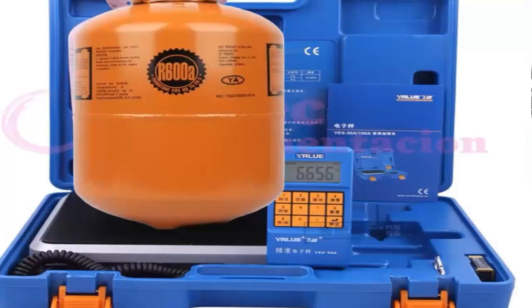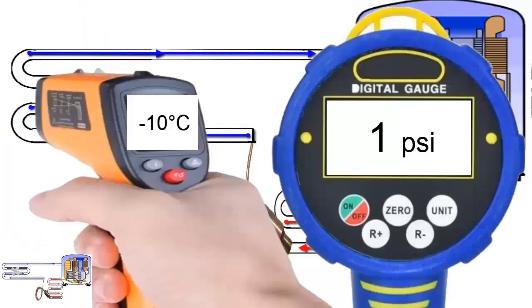For medium-temperature applications, the working pressure on the low-pressure gauge is 1 pound per square inch at minus 10 degrees Celsius.